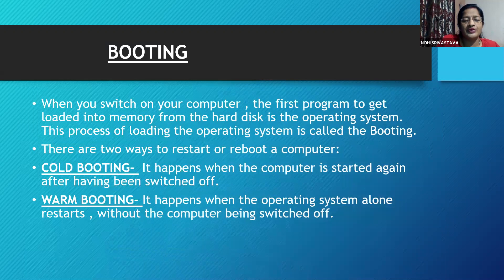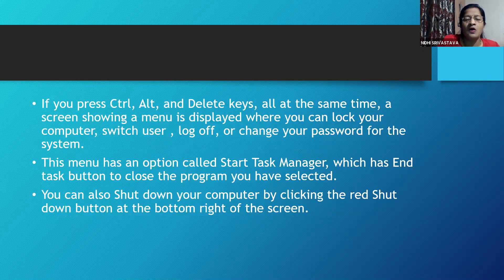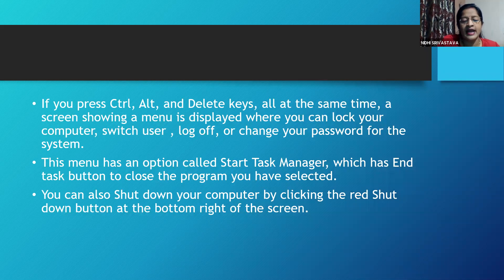When you switch on your computer, the first program to get loaded into memory from the hard disk is the operating system. This process of loading the operating system is called booting. There are two ways to restart or reboot a computer. Cold booting happens when the computer is started again after having been switched off. Warm booting happens when the operating system alone restarts without the computer being switched off. If you press Ctrl, Alt, and Delete keys all at the same time, a screen showing a menu is displayed where you can lock your computer, switch user, log off, or change your password. This menu has an option called Start Task Manager, which has an End Task button to close the selected program. You can also shut down your computer by clicking the red Shutdown button at the bottom right of the screen.